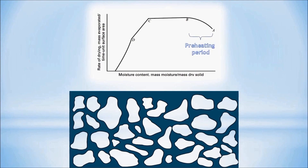From period A to B, it is called the preheating period where the wet solid is being preheated to an exposed surface temperature equal to the wet bulb gas temperature, while moisture is evaporated at an increasing rate. At the end of the preheating period, the exposed surface will still be covered by a film of free moisture.